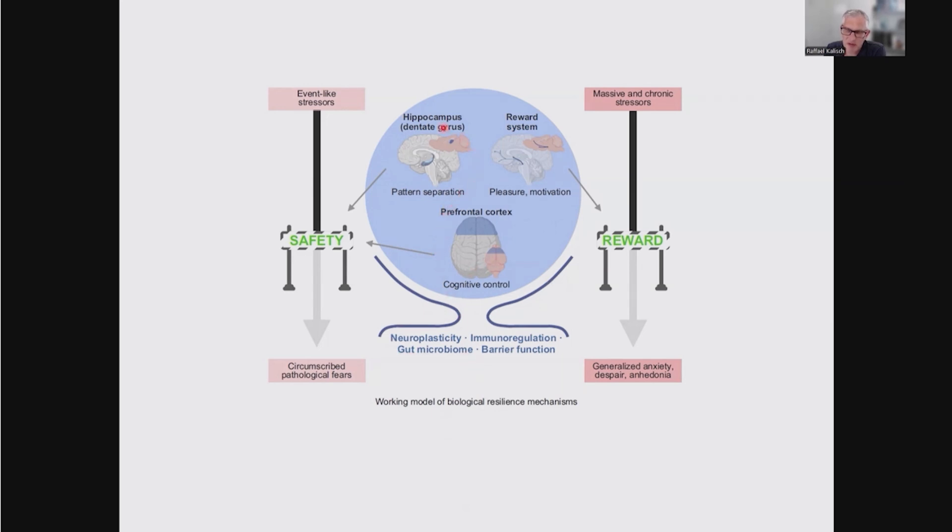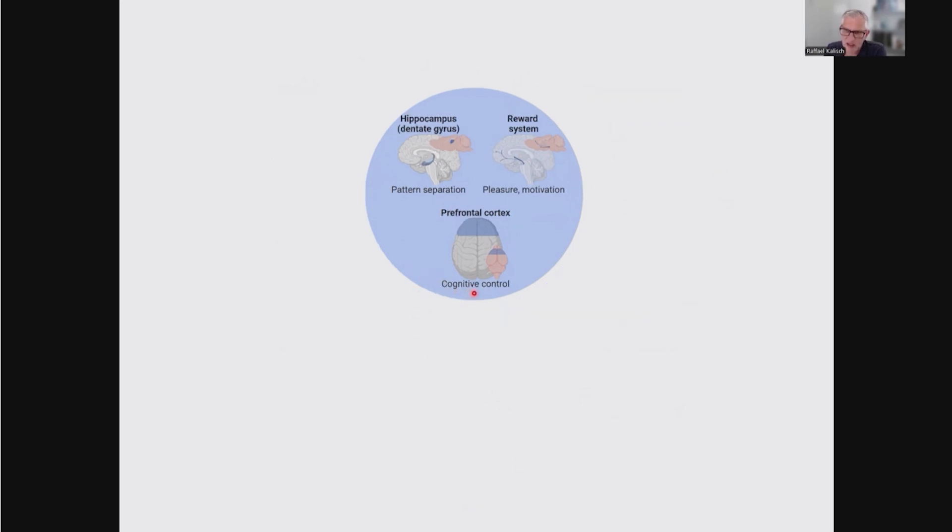The functions of the hippocampus, dentate gyrus, and prefrontal cortex seem to have a particular role in protecting you against the negative effects of rather singular or event-like stressors, like singular traumata, by reducing the risk that you will develop stress-related disorders characterized by circumscribed pathological fears. Whereas the reward system seems to be more important in protecting you against the effects of more massive and chronic long-term stressors, such as can lead to the development of depression or generalized anxiety disorders. Even this story is too long for a 15-minute talk, so I will limit myself to just these brain systems.